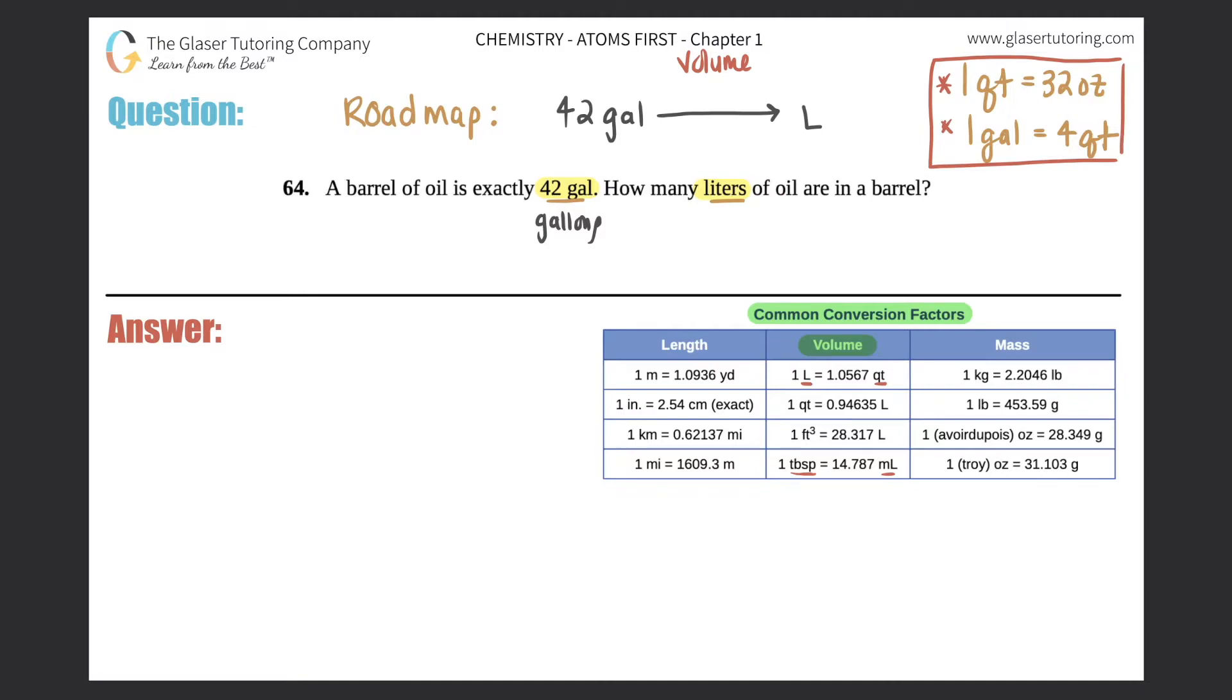It's good to know for regular average everyday life, like for cooking and stuff. So it's a good two conversions to just know. So now I know that one gallon is equal to four quarts, so I can kind of shorten this up. I can't get to liters directly, but I can get to quarts.